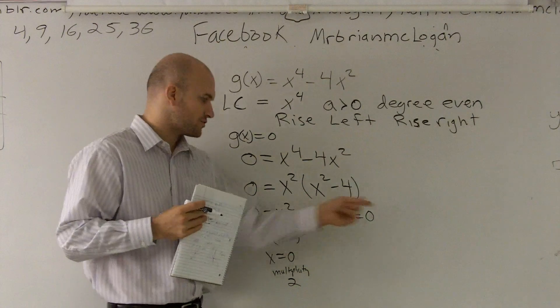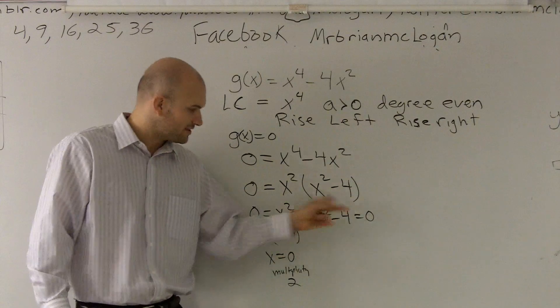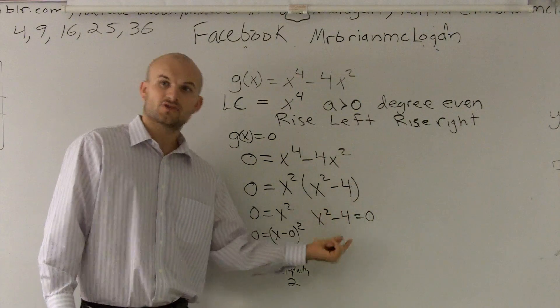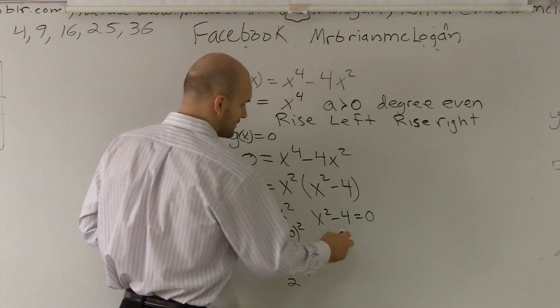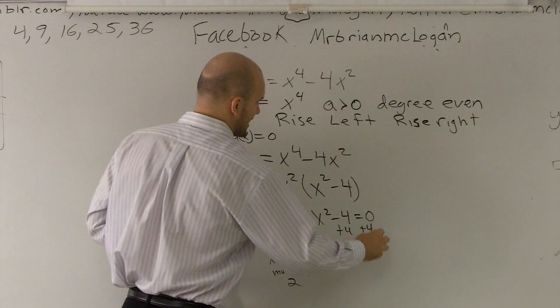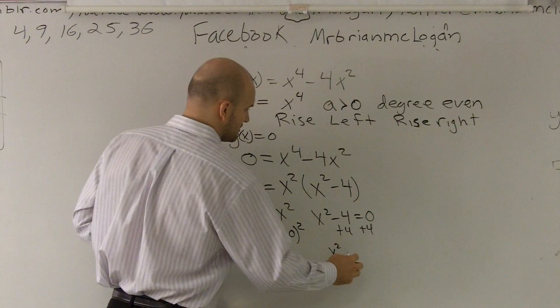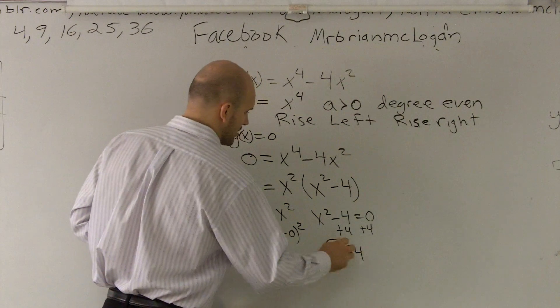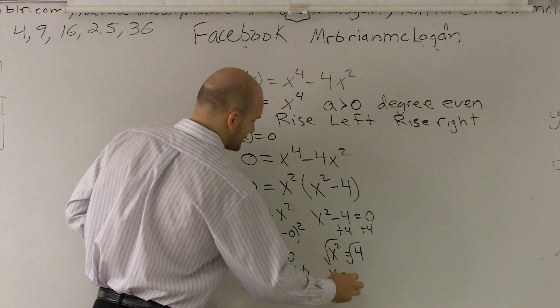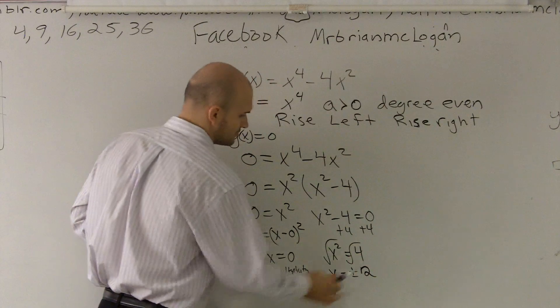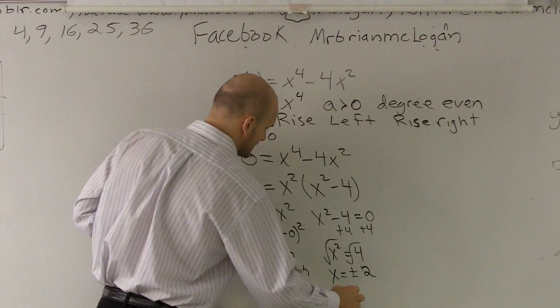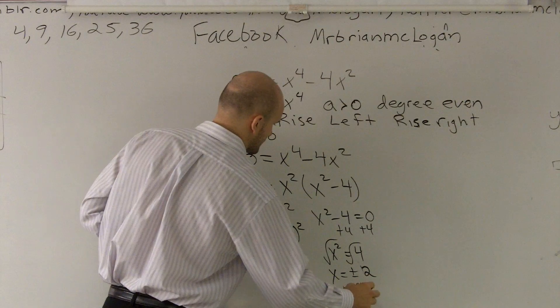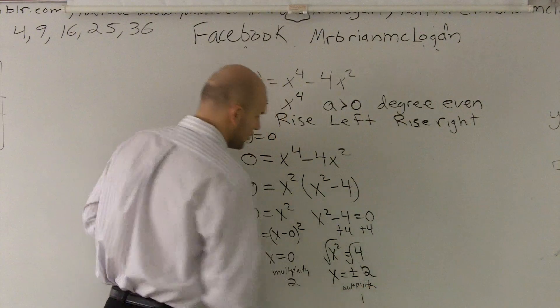Here, my whole factor is not squared. I know the x is squared, but the whole factor is not squared. So therefore, my answers for these are going to be a multiplicity of 1. So I add 4 on both sides. x squared equals 4 square root. x equals plus or minus 2. And these are going to be a multiplicity of 1.